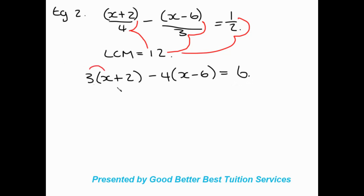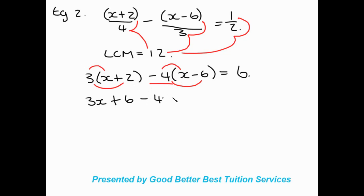Now we expand the brackets. 3 times x is 3x, and 3 times 2 is 6, giving 3x + 6. Then negative 4 times x is negative 4x, and negative 4 times negative 6 is positive 24, because a negative times a negative is positive. The right side remains 6.